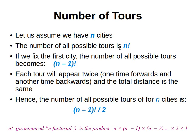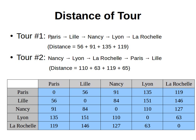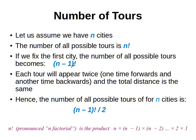Now, what happens if we want to reduce the number of tours? Let's say we fix the first city — we always leave from the same city. Then the changes will only be in the remaining n−1 cities. These permutations will only apply to those n−1 cities because the first is fixed. For example, if we always leave from Paris, then Paris is fixed and the remaining cities like Lille, Nancy, Lyon, La Rochelle can be arranged in different orders.